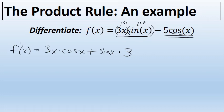Now we will take the derivative of negative 5 cosine of x. The derivative of the cosine of x is the opposite of the sine of x, so the derivative of negative 5 cosine of x is positive 5 sine of x.